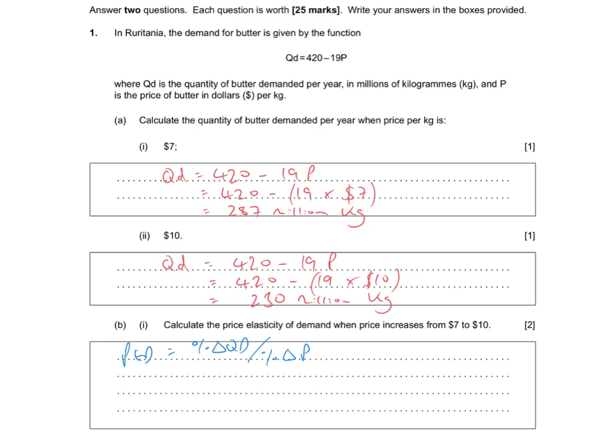So using the figures from the first two questions, we can work out the percentage change in quantity demanded. Percentage change is difference divided by original, so the difference is 230 minus 287 divided by the original value of 287 times 100 to give us a percentage decrease.